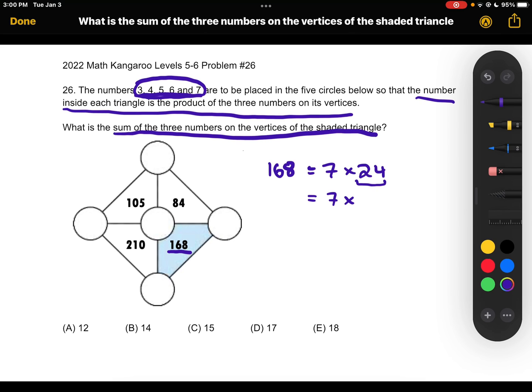And how can we rewrite 24 so that it is the product of two of these numbers? Remember we don't have any number greater than 7, so out of the ones we have we know that we can rewrite 24 as being 4 times 6.